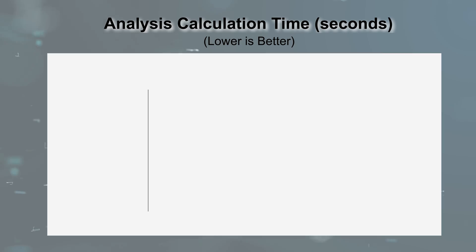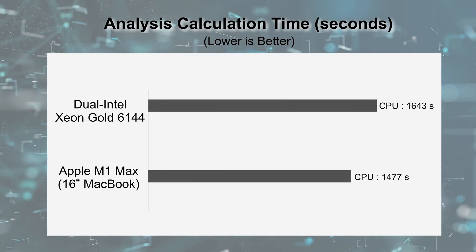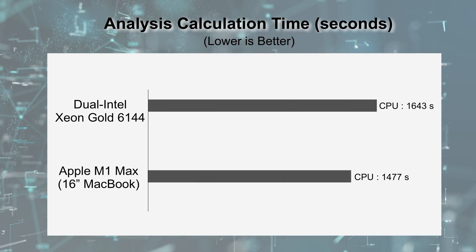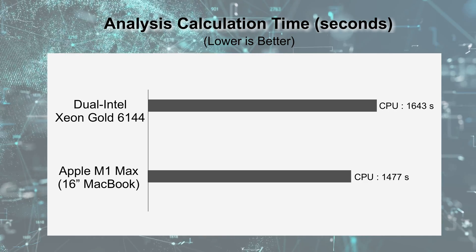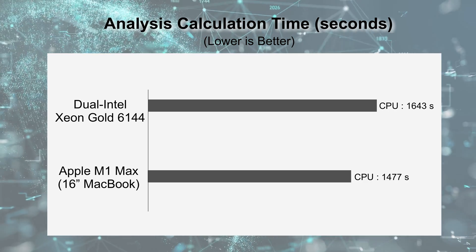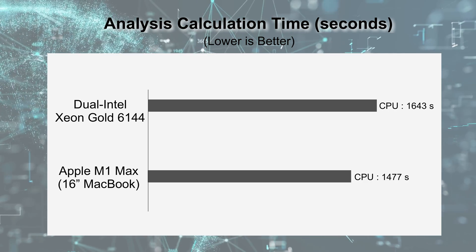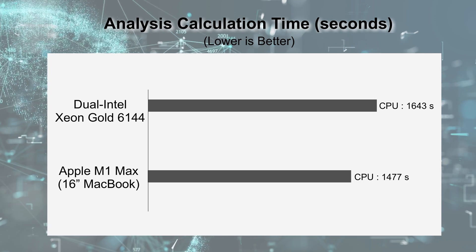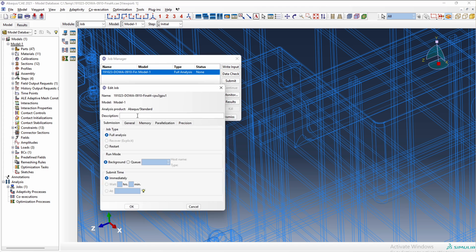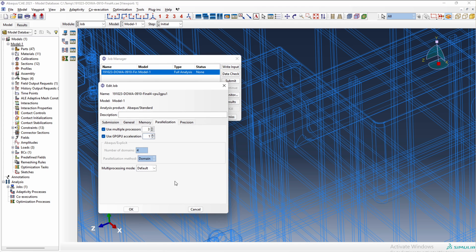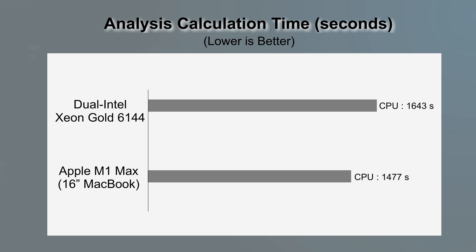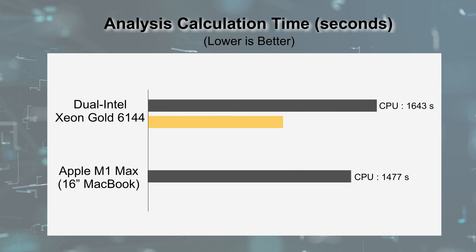Here are the results: the MacBook with M1 Max CPU finished the analysis almost 11% faster than the HP workstation with dual Xeon Gold 6144 CPUs. However, when GPU processing was activated on the HP workstation, the Windows PC was able to finish the same analysis almost 35% faster than the MacBook.